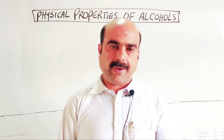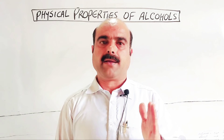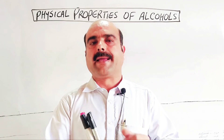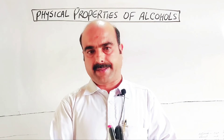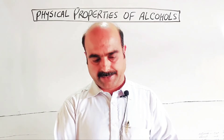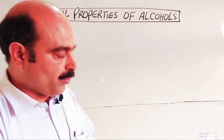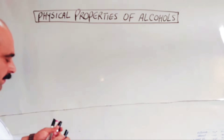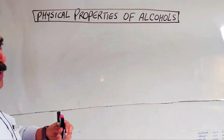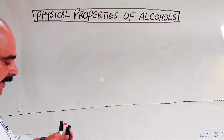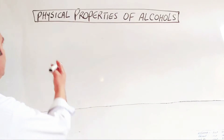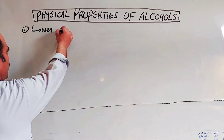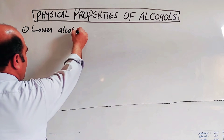Physical properties include melting point, boiling point, color, odor, taste, solubility, conductivity, refractive index, density, etc. We are going to discuss the physical properties of alcohols one by one. The first physical property of alcohol is about lower alcohols.